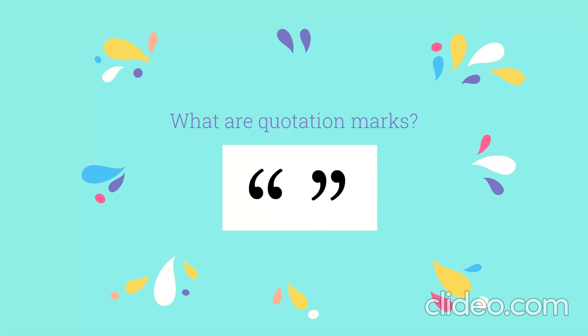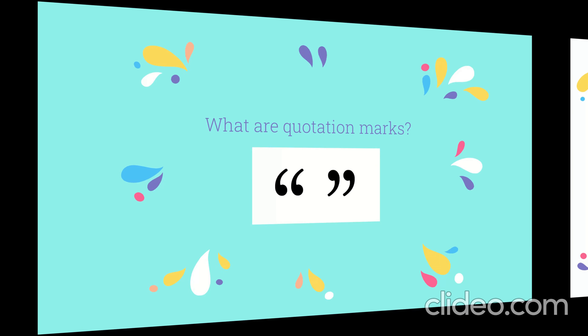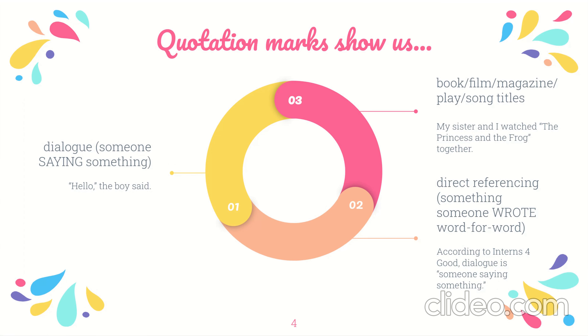So to start with, what are quotation marks? You've probably seen them around — they look kind of like weird upside-down commas and they always come in pairs. But what exactly are they? Quotation marks show us a lot of different things. They can show us dialogue, which basically means someone saying something.